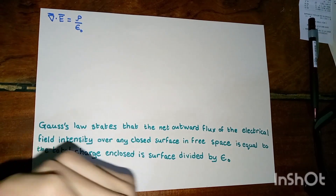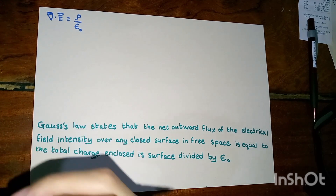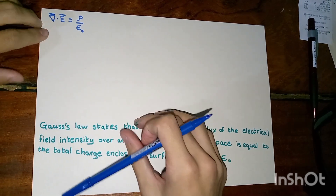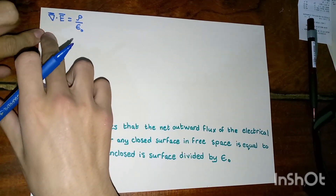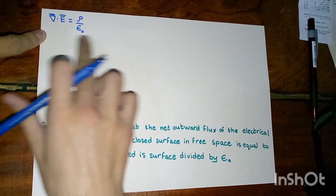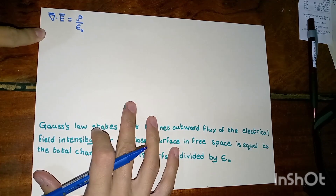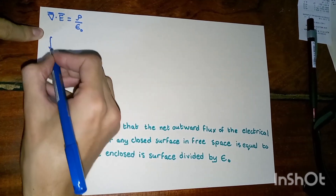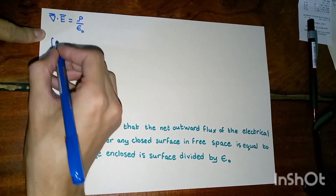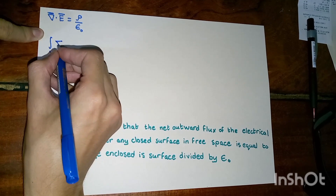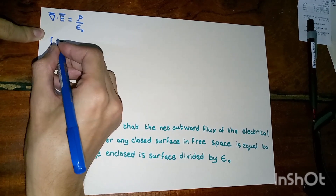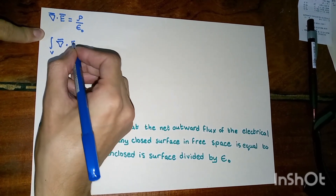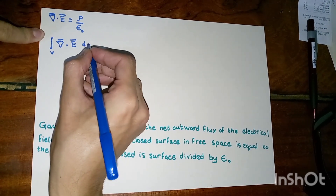Now let's apply the divergence theorem to the divergence formula of the electrical field intensity. We will take the volume integral for both sides of the equation.